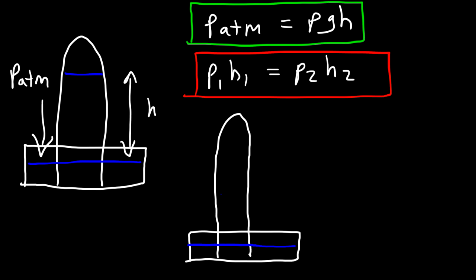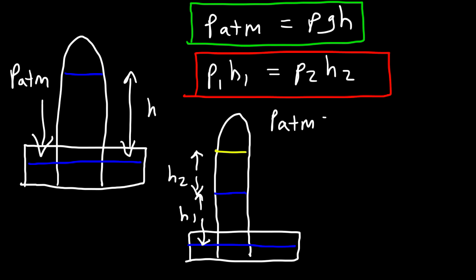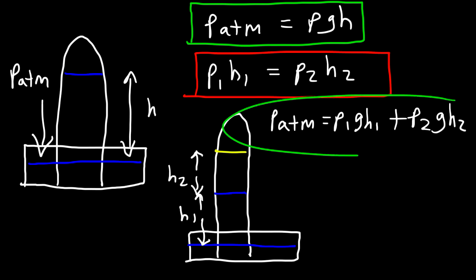If you have a barometer with two different liquids — for example, water at the bottom with height H_1 and oil on top with height H_2 — the atmospheric pressure equals rho_1 times g times H_1 plus rho_2 times g times H_2, where rho_1 and rho_2 are the densities of the first and second fluids respectively. That's the formula to calculate atmospheric pressure for a barometer containing two immiscible fluids.